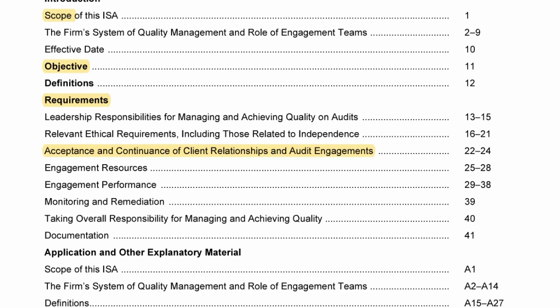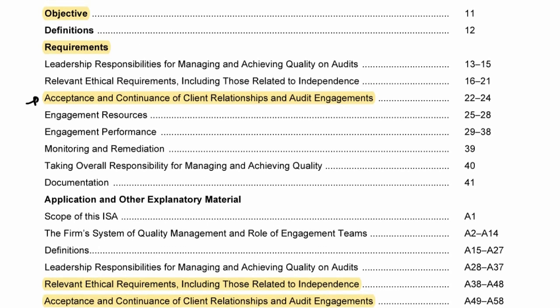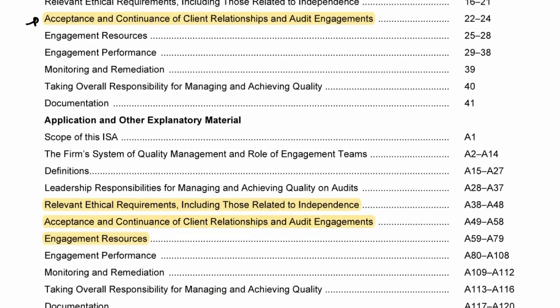Because we are in pre-engagement, the focus is acceptance and continuance of client relations and audit engagements. The other requirements ensure there is a quality audit throughout: leadership, ethical compliance, adequate resources, monitoring of engagement performance, and documentation. Three application paragraphs are highlighted — relevant ethical requirements, acceptance and continuance, and engagement resources — as they all provide information helpful for the pre-engagement stage.